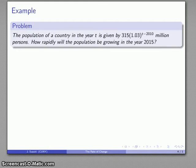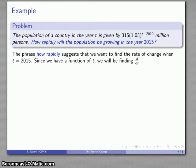Let's take another example. The population of a country in year t is given by 315(1.03)^(t-2010) million persons. This is a rough model for the population of the United States. How rapidly will the population be growing in the year 2015? This suggests a rate of change. We want to find the rate of change when t = 2015, and we want the derivative with respect to t.